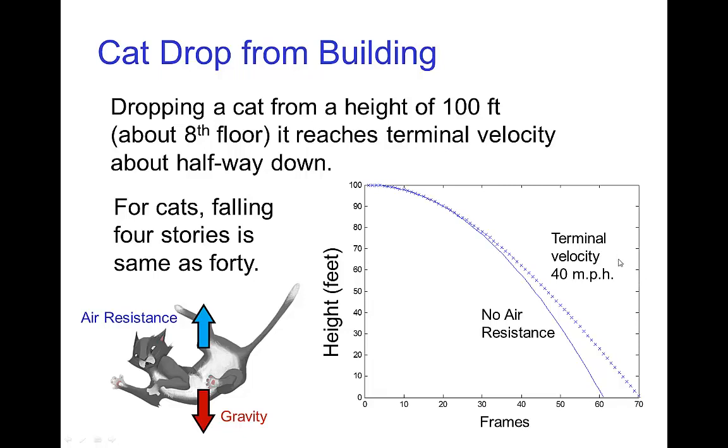the cat would be falling fast enough that it would reach its terminal velocity, which for an average size cat is roughly forty miles an hour. And so after falling about four, maybe five floors, the cat reaches this maximum speed and continues traveling at that same speed.